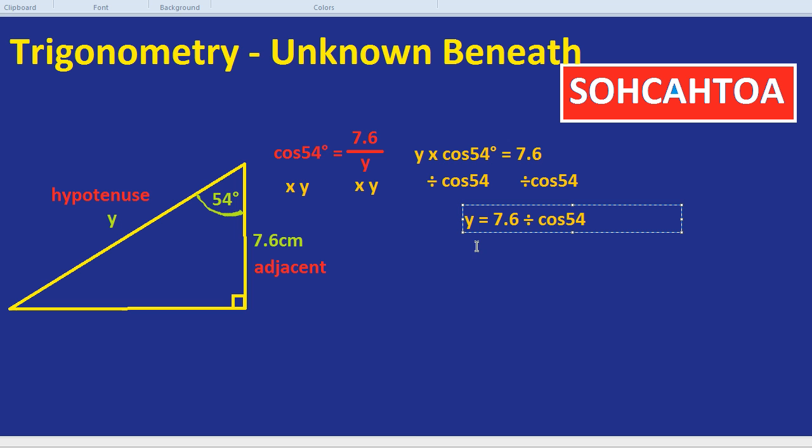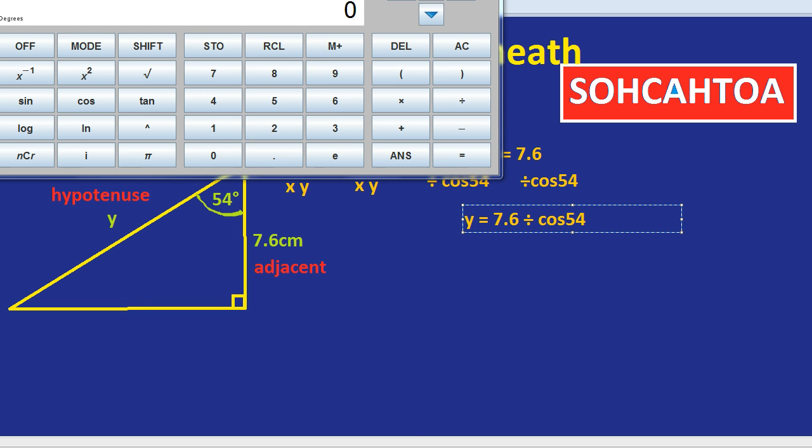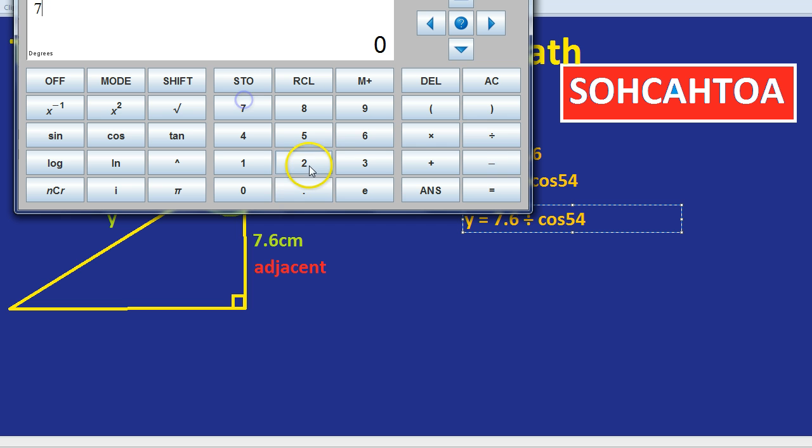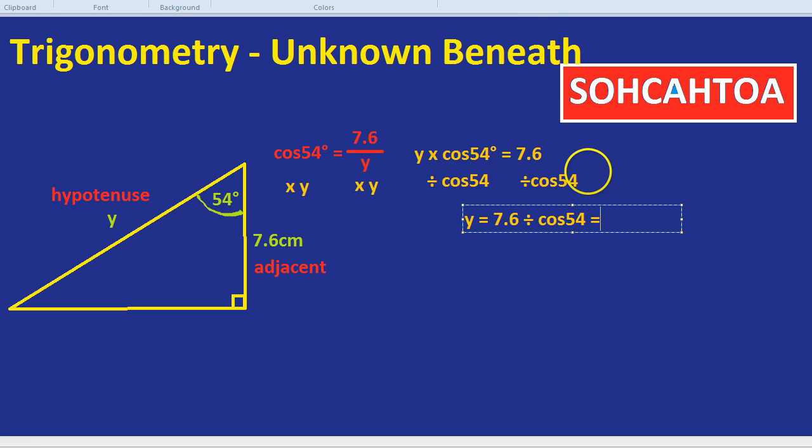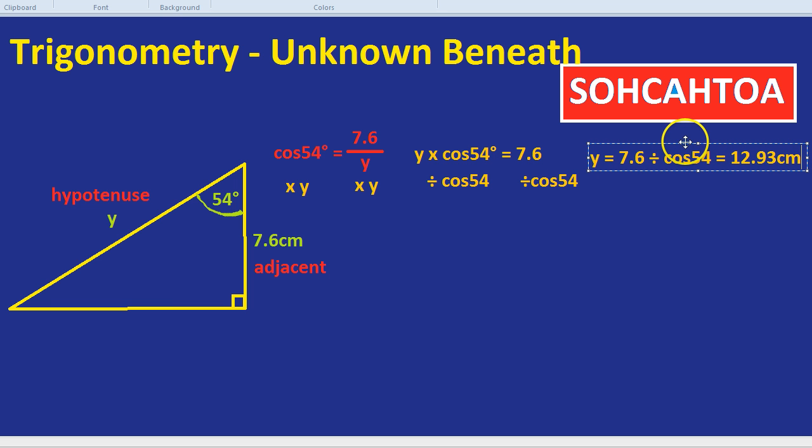So we would do just type in exactly as it says. 7.6 divided by cos 54. And that is 12.93, 12.93 centimeters. There we are. We've solved a trigonometrical question when the unknown was in the denominator. And those tend to be the hardest examples. So let's do one more just so we can feel confident that we're on this thing.